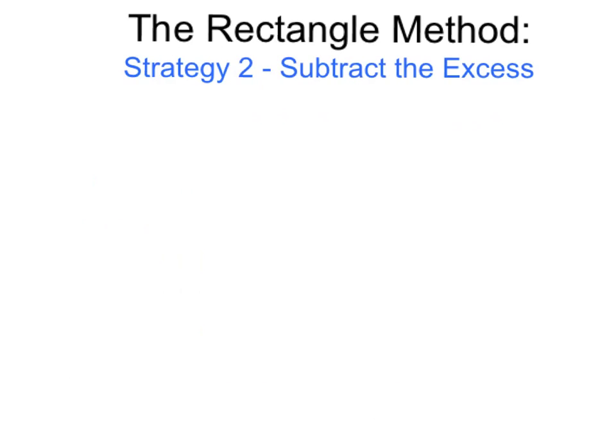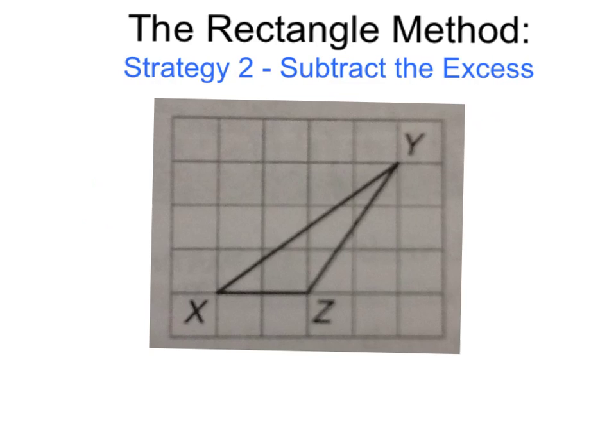Now let's look at Strategy 2: Subtract the Excess. Some triangles cannot be split into two parts that are right triangles, as is the case with triangle X, Y, Z. The goal is to enclose the entire figure within a rectangle, find the area of the interior parts of the rectangle that are not in the original figure, and subtract them from the area of the rectangle.